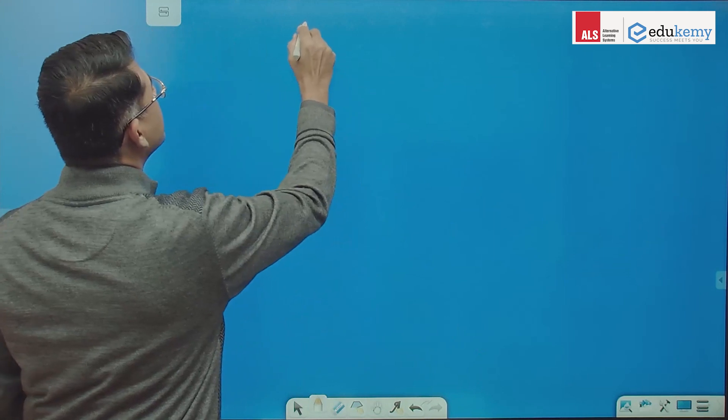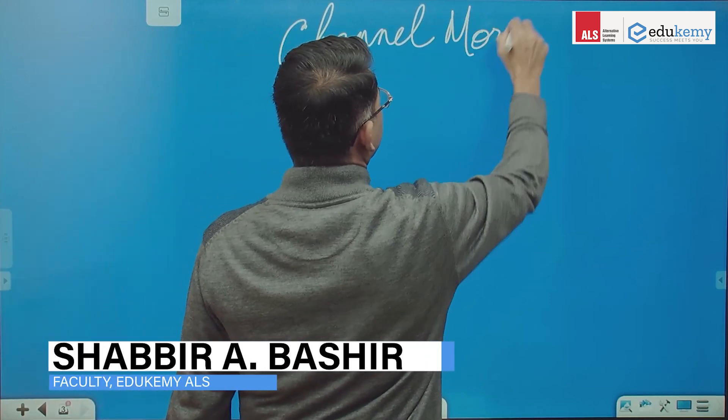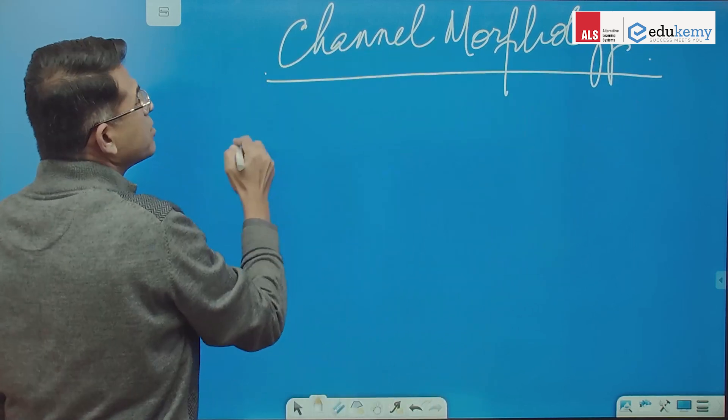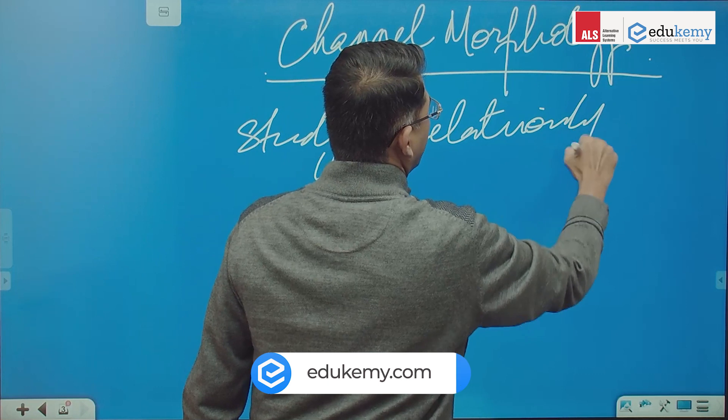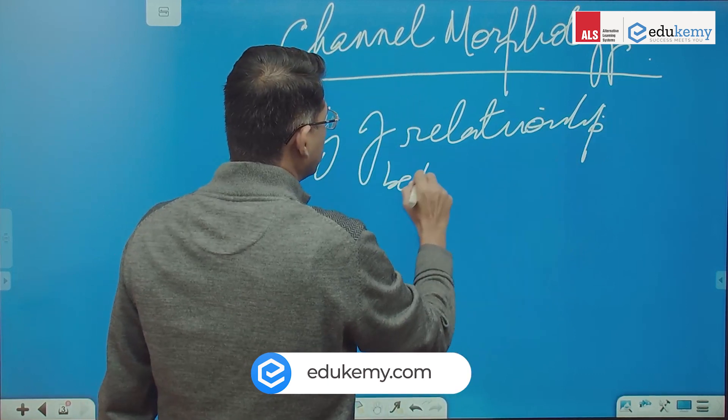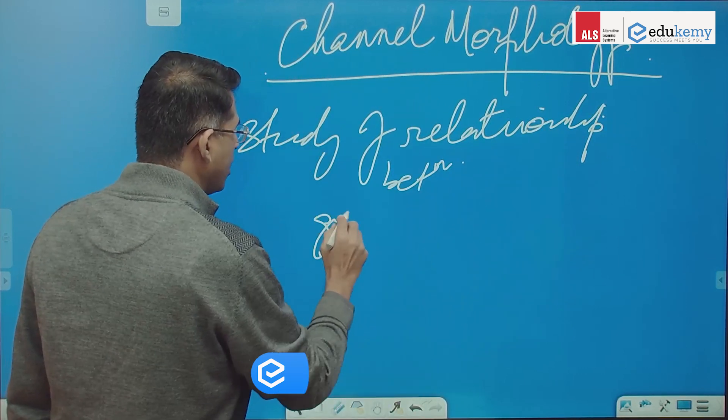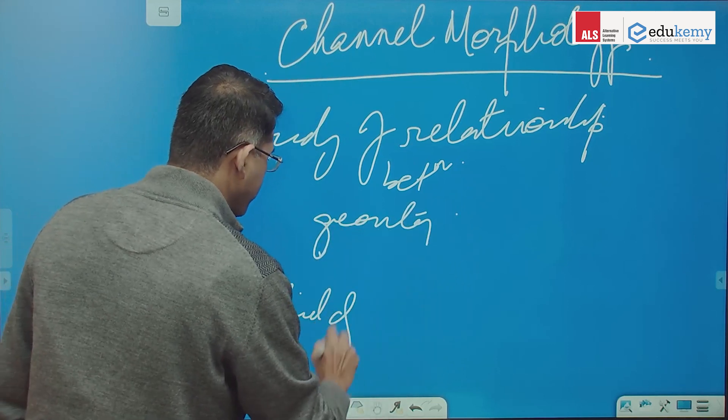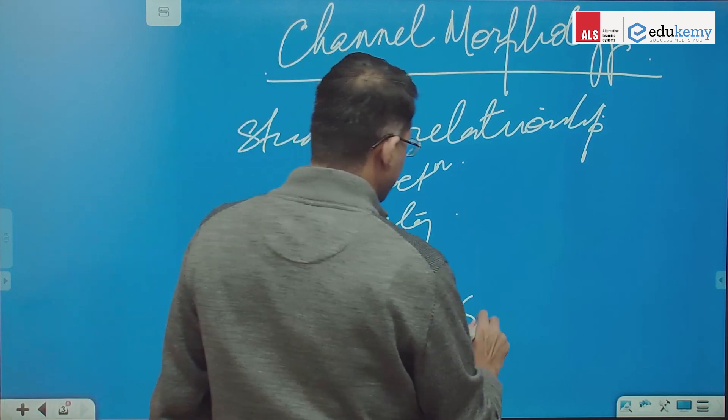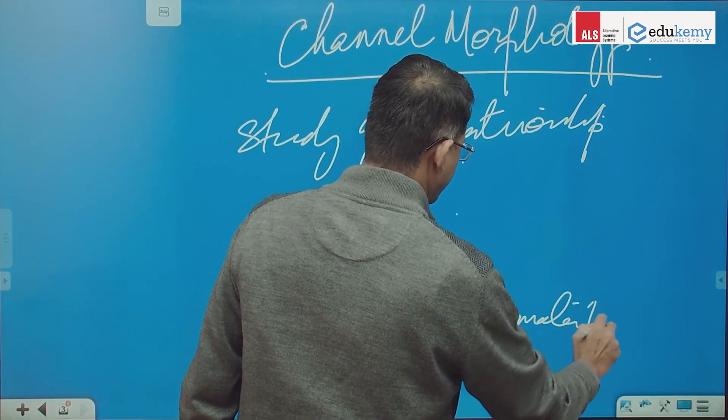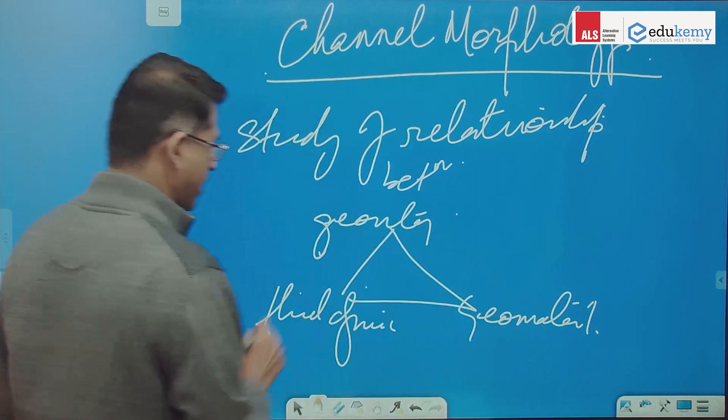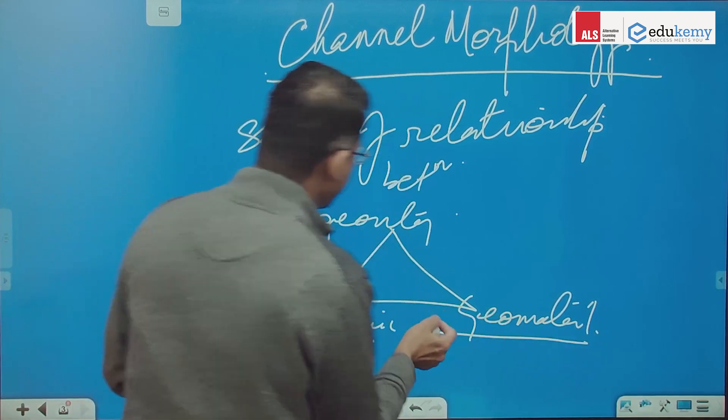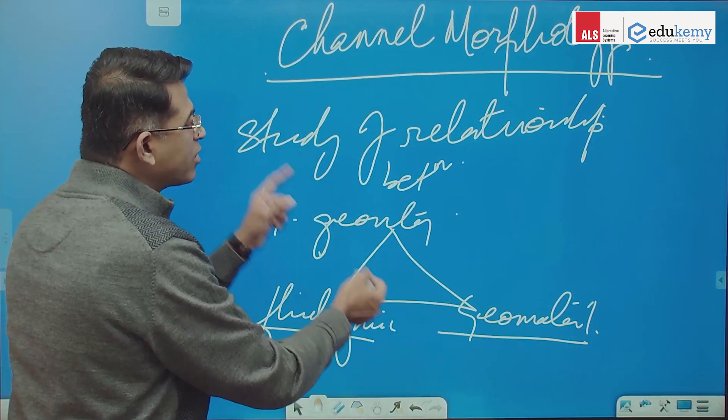So now we're discussing channel morphology. Did you understand what this term means? Channel morphology is basically the study of the relationship between channel geometry, fluid dynamics, and the geomaterial of a stream. These are the three things: the hydraulic geometry, the fluid dynamics, and the geomaterial. How are they linked to one another?